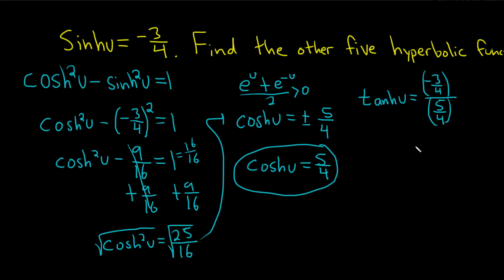So whenever you divide like this, you really multiply by the reciprocal. So it's negative 3 over 4 times the reciprocal of 5/4, which is 4/5. And here we still have tanh, or hyperbolic tangent of u. They cancel. So the hyperbolic tangent of u is equal to negative 3 over 5. So that gives us the hyperbolic tangent.